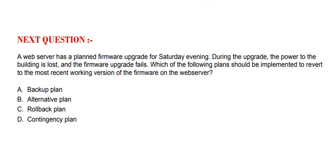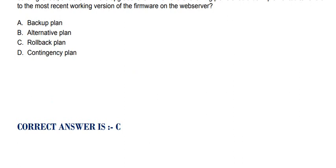Next question: A web server has a planned firmware upgrade for Saturday evening. During the upgrade, the power to the building is lost and the firmware upgrade fails. Which of the following plans should be implemented to revert to the most recent working version of the firmware on the web server? Option A: Backup Plan. Option B: Alternative Plan. Option C: Rollback Plan. Option D: Contingency Plan. The correct option is Option C.